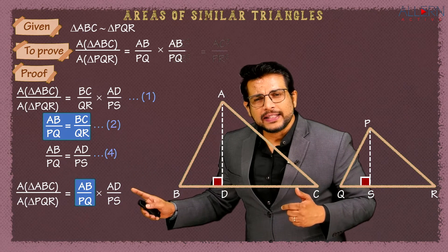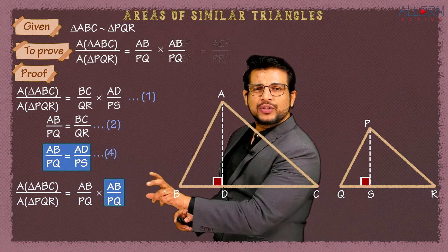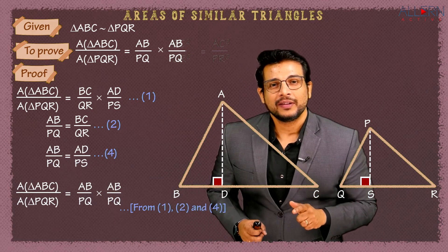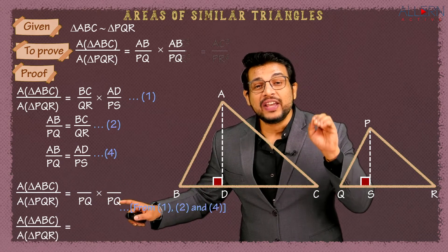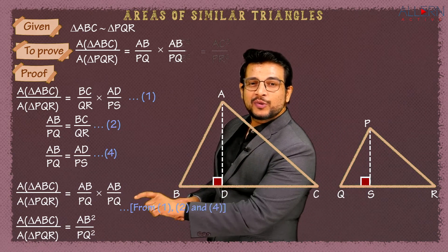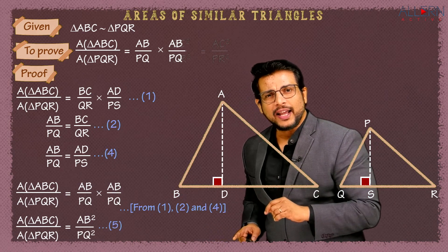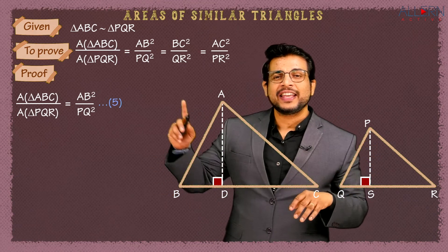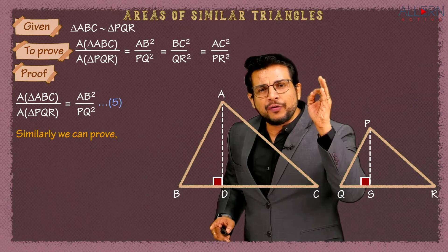That gives us (AB/PQ) × (AB/PQ) = AB×AB upon PQ×PQ = AB² upon PQ². This result uses statements 1, 2, and 4 as reasons. So we have actually proved that area of triangle ABC upon area of triangle PQR equals AB² upon PQ². This is Result 5.